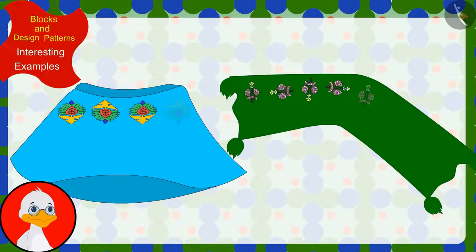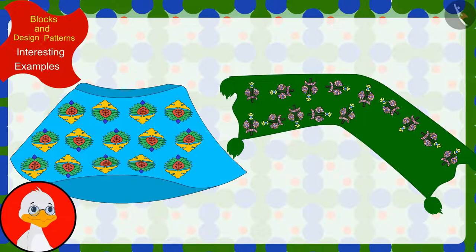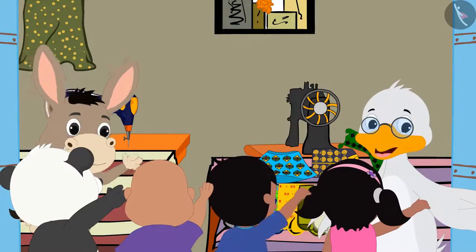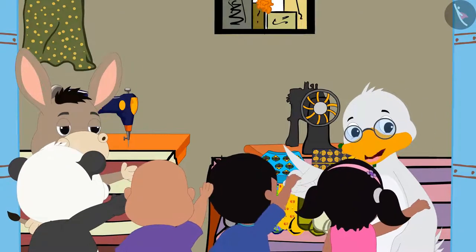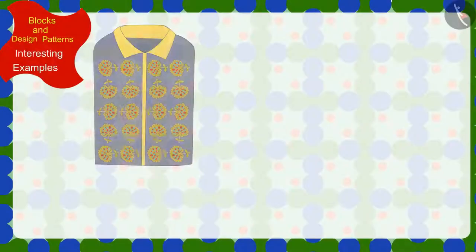Uncle also found the rules of those incomplete patterns and completed those patterns. All the villagers are liking the new pattern clothes sold at Uncle's shop a lot. Children, in this video,